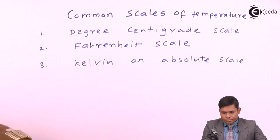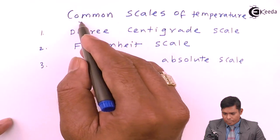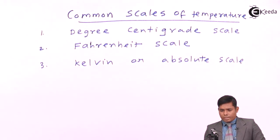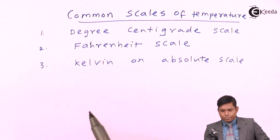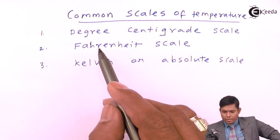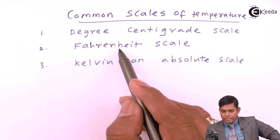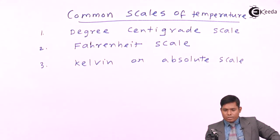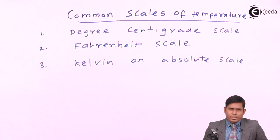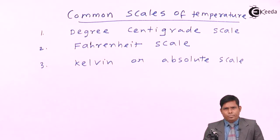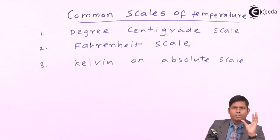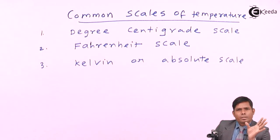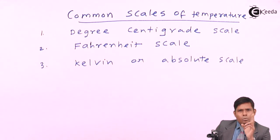So basically the three scales we use are degree centigrade, Fahrenheit, and Kelvin or absolute scale. We will discuss them one by one. For any scale, every instrument has its own limitations and its own least count.